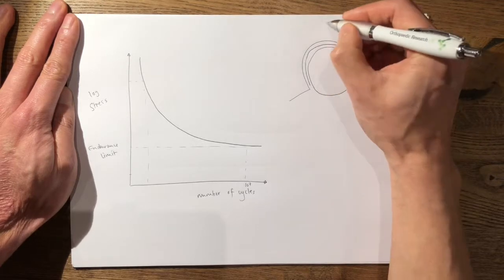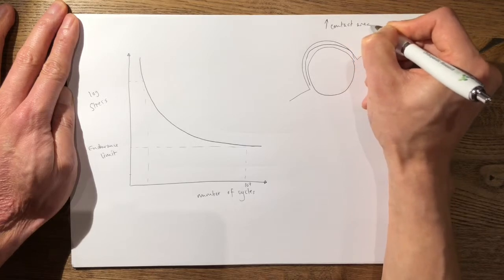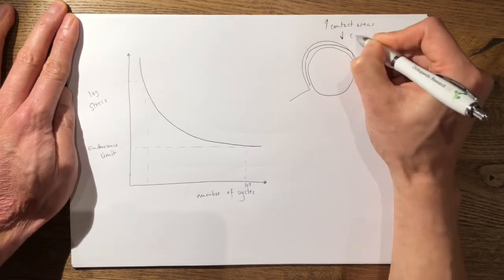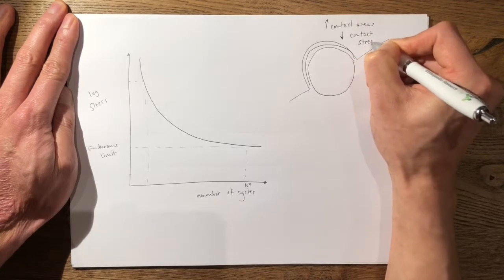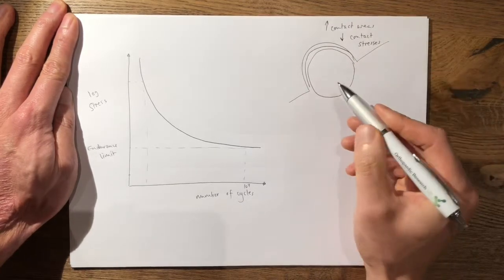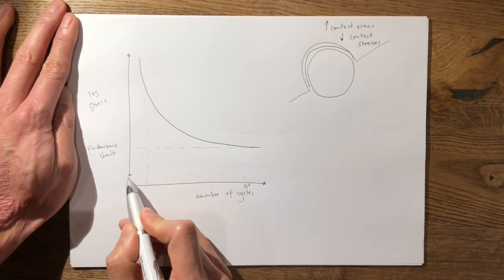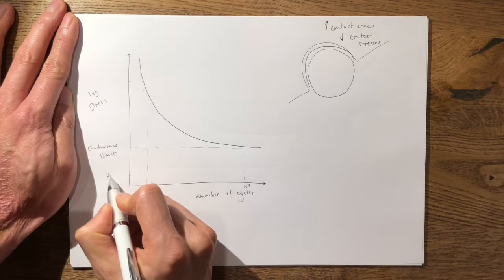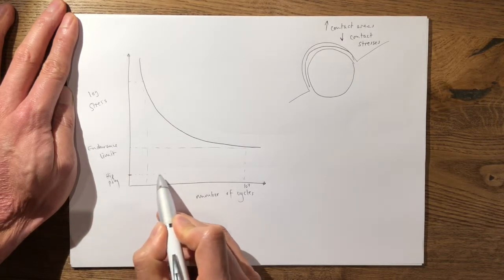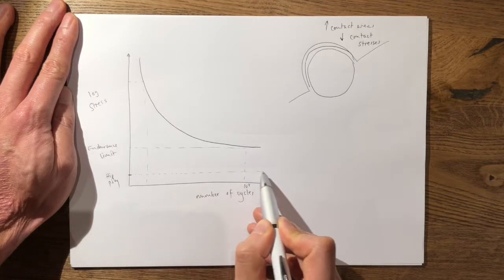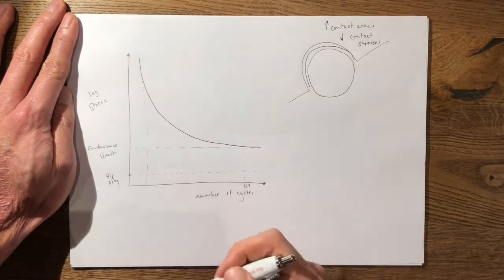With the high contact areas you have low contact stresses. So in a low contact stress environment you'll be operating in an environment down here. So this will be your hip poly and therefore it is very likely that this will last a very long time because it's operating below the endurance limit.